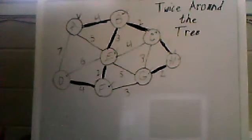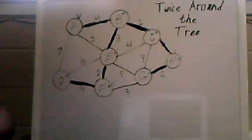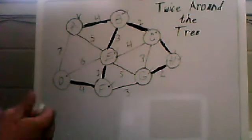Hello, and today I'm going to be showing you how to find the approximation algorithm for twice around the tree for the traveling salesman problem. Now you may have noticed I have an undirected graph here.